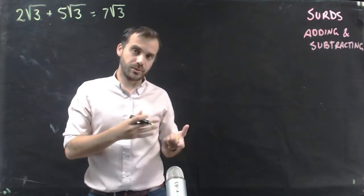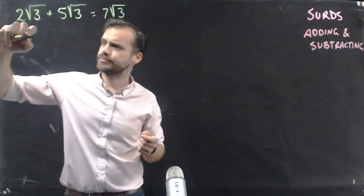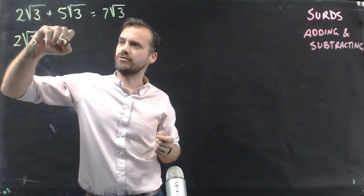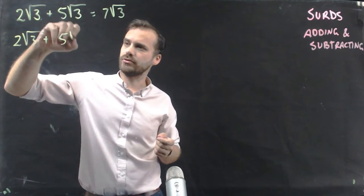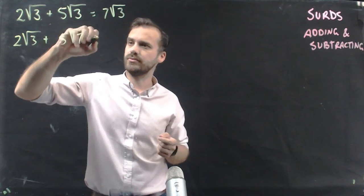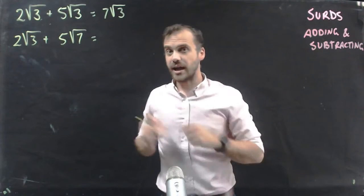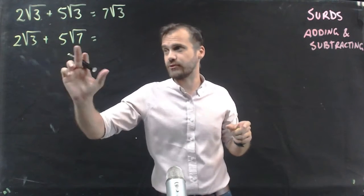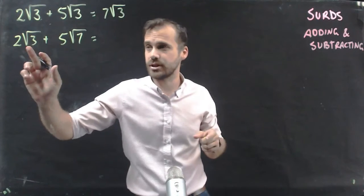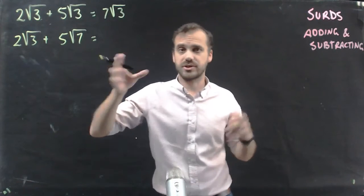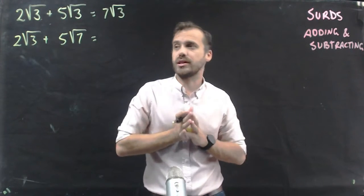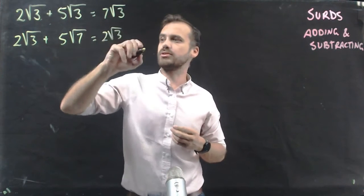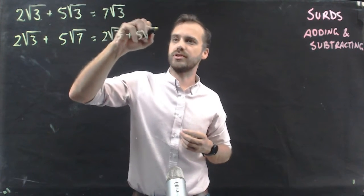Similar to when we were talking about x's and y's, if we have 2 root 3 plus 5 root 7, I can't add these together because they're different surds — that's root 3 and that's root 7. There's no way to simplify that, no way to add them together. So the answer is still 2 root 3 plus 5 root 7.